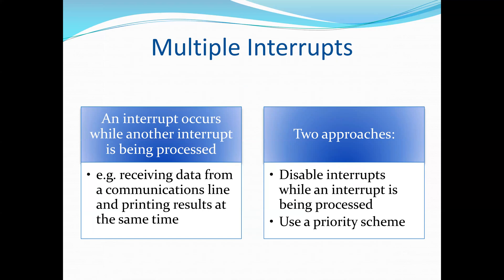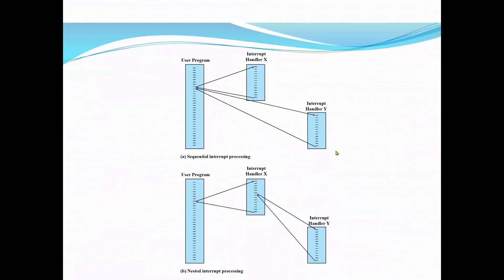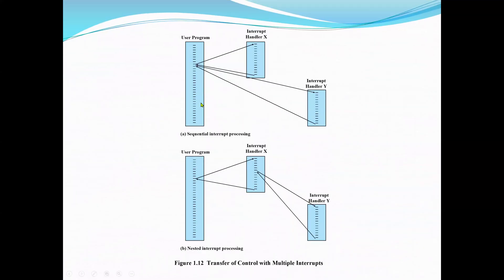An example of this approach: consider a system with three I/O devices — a printer, a disk, and a communication line — with increasing priorities of two, four, and five respectively.